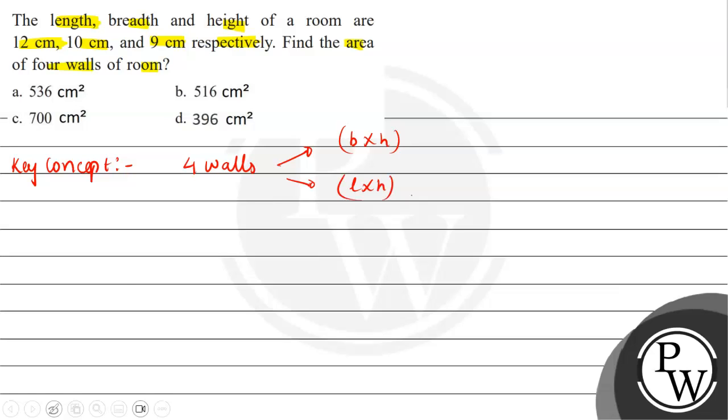Now we will note down the area of 4 walls. Area of 4 walls equals 2[(breadth × height) + (length × height)], because the top and bottom area will be length × breadth.